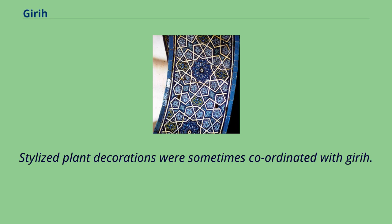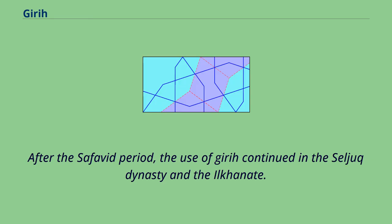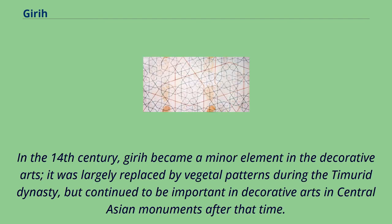Stylized plant decorations were sometimes coordinated with girih. After the Safavid period, the use of girih continued in the Seljuk dynasty and the Ilkhanate. In the 14th century, girih became a minor element in the decorative arts, largely replaced by vegetal patterns during the Timurid dynasty, but continued to be important in decorative arts in Central Asian monuments.